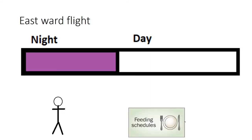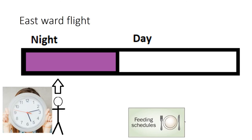For eastward flight, our day becomes shortened. When we reach there, it is night but our internal clock is still set to day, so our night will be shortened.